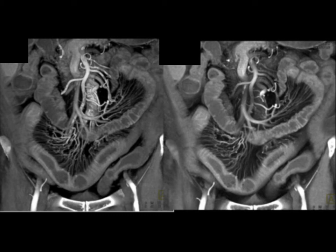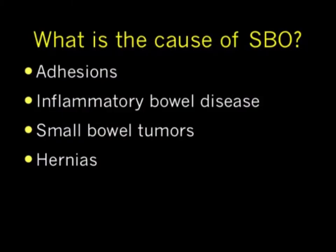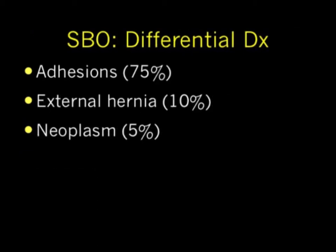Now let's specifically talk about small bowel obstruction. When you think about SBO, you think about four things: adhesions, IBD, small bowel tumors, and hernias. There are other causes, but those are probably the big four.